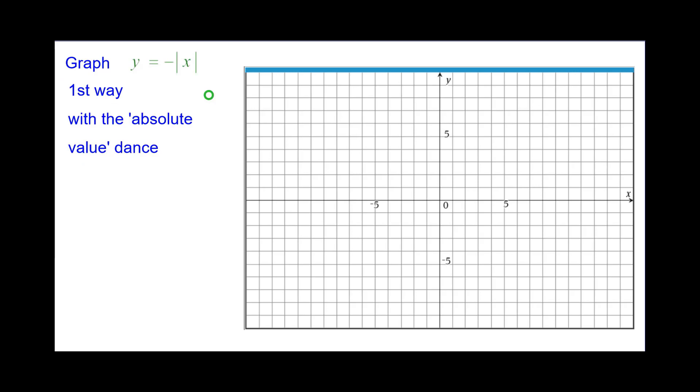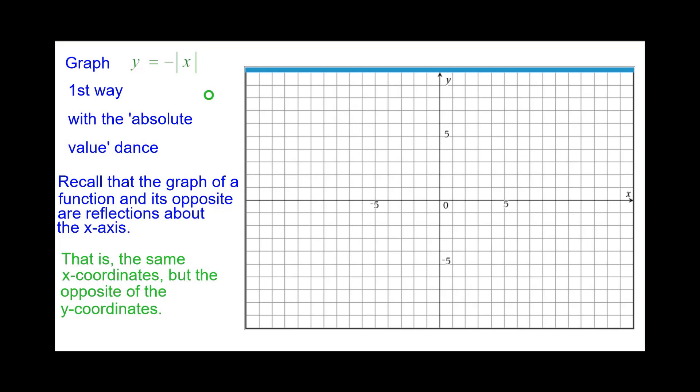So we're going to graph this using what I call the absolute value dance. Please recall that the graph of a function and its opposite are reflections or mirror images about the x-axis. That is, with the same x-coordinates, they have opposite y-coordinates.